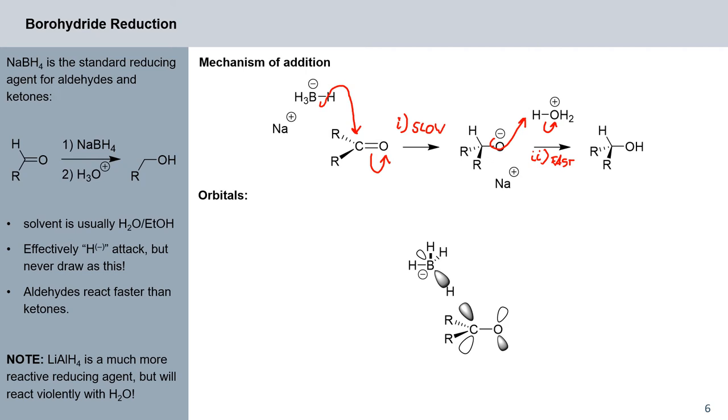Again, we can consider the orbitals. We have, again, an approach from a roughly tetrahedral angle here. So our HOMO in this reaction is our sigma bond here between boron and hydrogen and our LUMO is our carbonyl pi star.